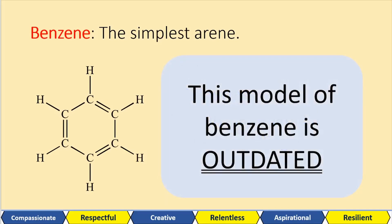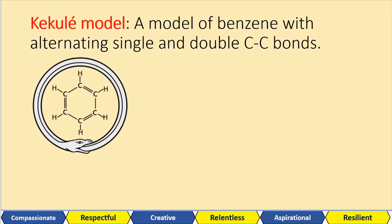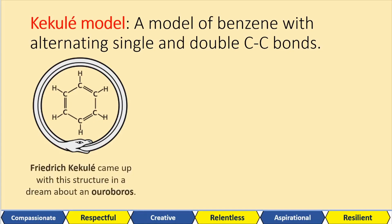However, this model of benzene is actually outdated. We have the Kekulé model, which is the model of benzene with alternating single and double bonds between the carbon bonds. And it was invented by this guy who had a dream about an Ouroboros, which is a snake that eats its own tail.